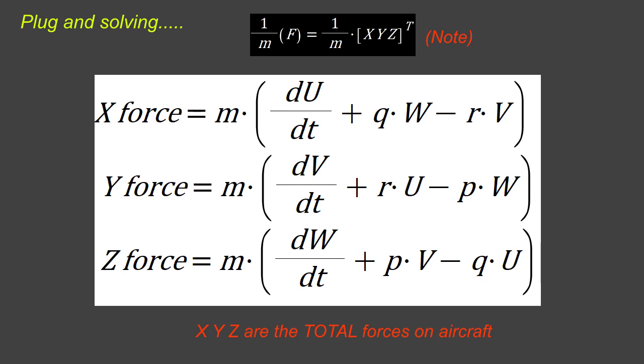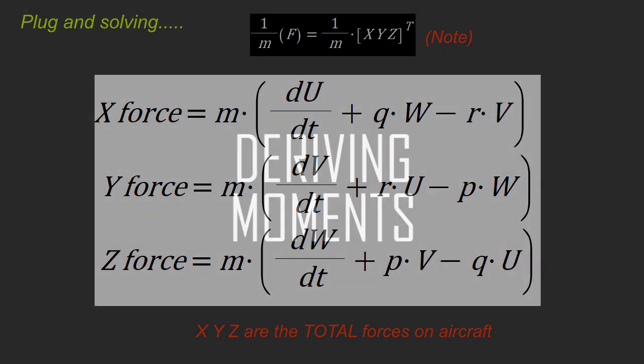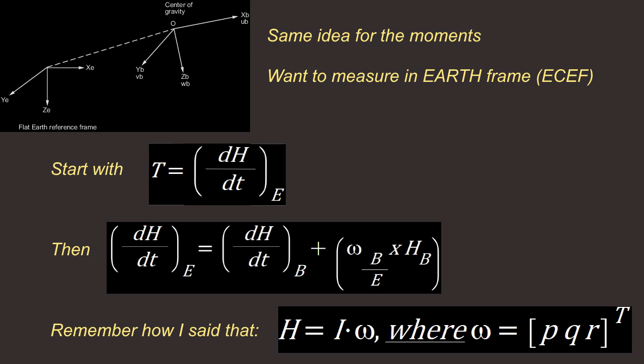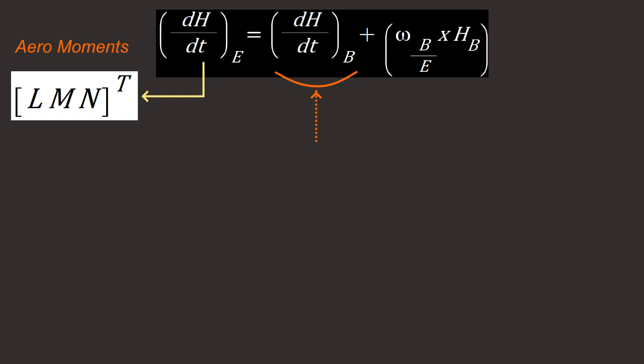For the moments, we have the same idea. We want to measure them in the earth frame because that is your inertial frame. So we can start with the equation I talked about before, where torque equals DH over DT, where H represents the angular momentum, and we want it in the earth frame. So then we have the transport law once again. DH over DT in the earth frame is equal to the body frame plus once again Omega B over E cross HB. I said before that H equals I Omega. Omega, as you all know, is once again PQR. The T exponent there is transpose. I is the inertia matrix. So when you differentiate that, you will get this equation here.